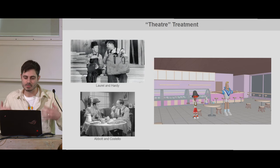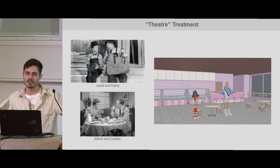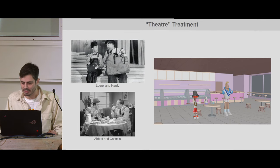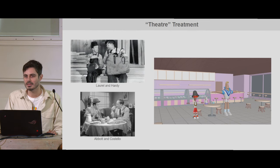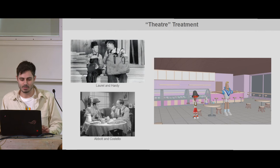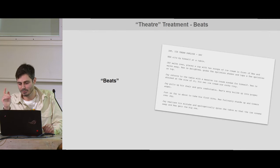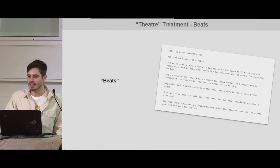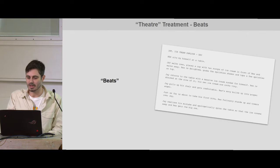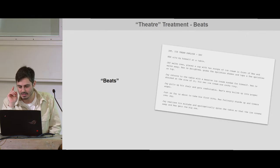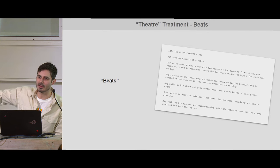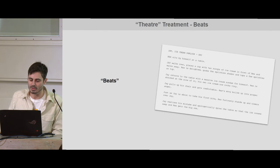Here I first want to do the theatrical treatment of this, which is we're going to lock up that camera. I'm going to treat this kind of like a Laurel and Hardy, Abbott and Costello kind of thing. So first thing I would do is write down a kind of list of beats based on what I'm seeing in the script. And this is a whole rabbit hole, by the way, of me not liking some terminology in the industry — the word 'beats' gets used for a lot of different things with a lot of different definitions.